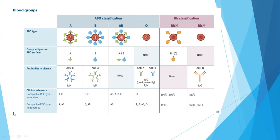The clinical relevance: a type A patient can receive type A or type O blood, since type O has no antigens and causes no reaction. Similarly, type B patients can receive B and O. Type AB patients can receive AB, A, B, and O — they are called the universal recipient. Type O is called the universal donor.